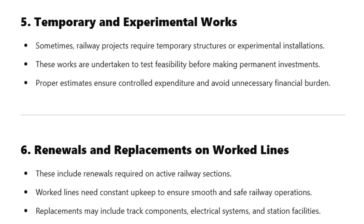Category 5: Temporary and Experimental Works. Sometimes, railway projects require temporary structures or experimental installations. These works are undertaken to test feasibility before making permanent investments. Proper estimates ensure controlled expenditure and avoid unnecessary financial burden.